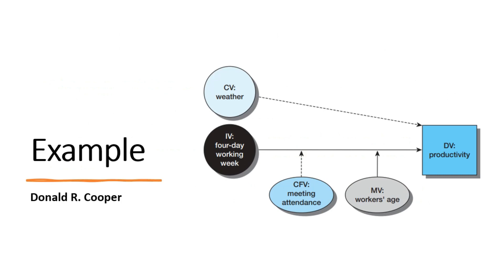Continuing the same model: 4-day working week is independent variable, productivity is dependent variable, and worker's age is the moderating variable. Here the control variable is weather conditions — if the weather is not good, productivity will suffer, though it does not have a direct impact. The confounding variable is meeting attendance — how many people are present or absent on a particular day — which may also cause productivity to differ.